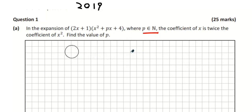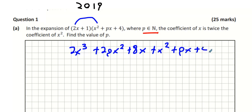The first thing we're going to do is multiply it out. When we multiply all of this out, we're going to get 2x cubed plus 2px squared. We're going to get 8x, we're going to get x squared, and we're going to get px or 4.